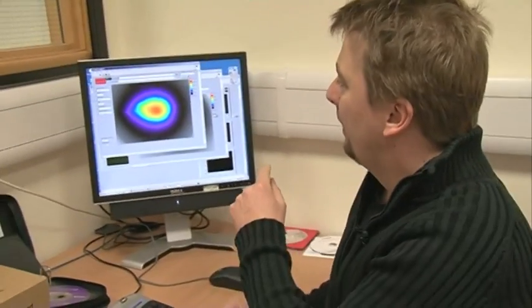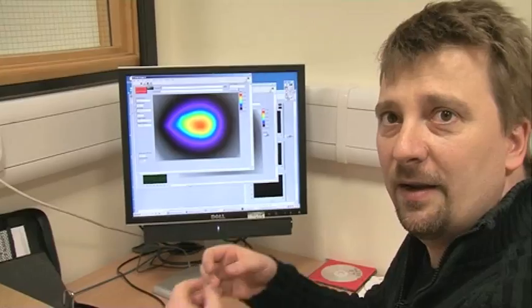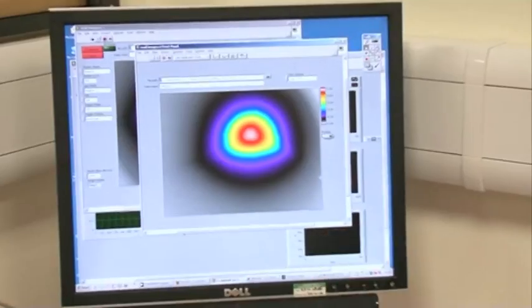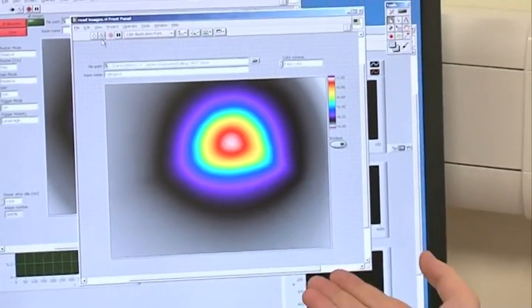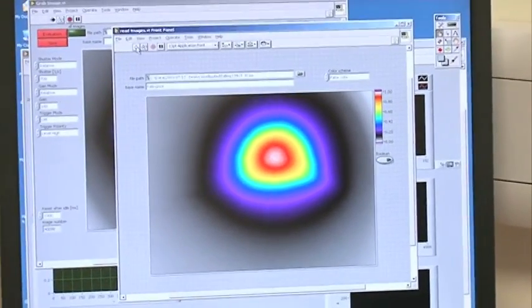And then we switch off everything, meaning the laser light and the magnetic field, and the atoms will just drop. And what this looks like is this, so this is the initial stage. So you will see a movie of these atoms dropping over 30 milliseconds, so it's really a slow motion movie, and that looks like this.